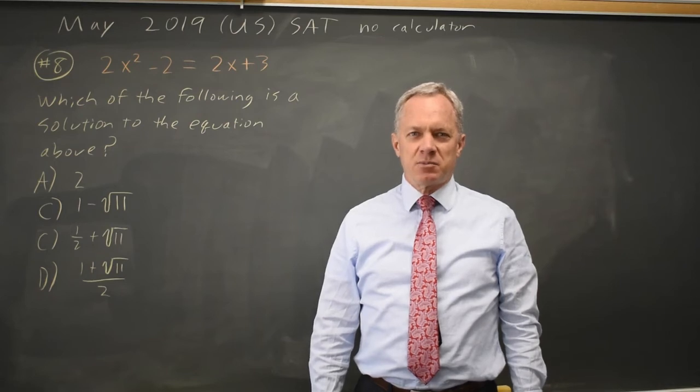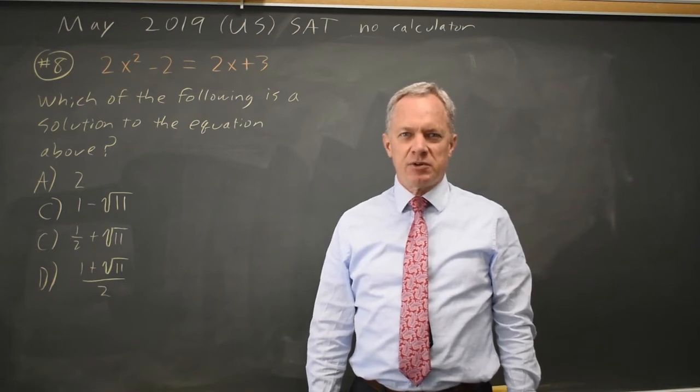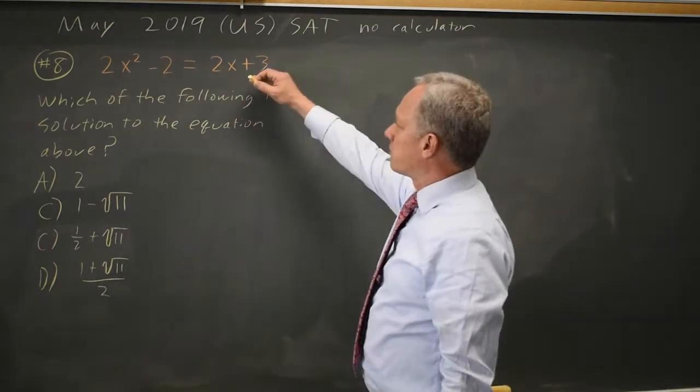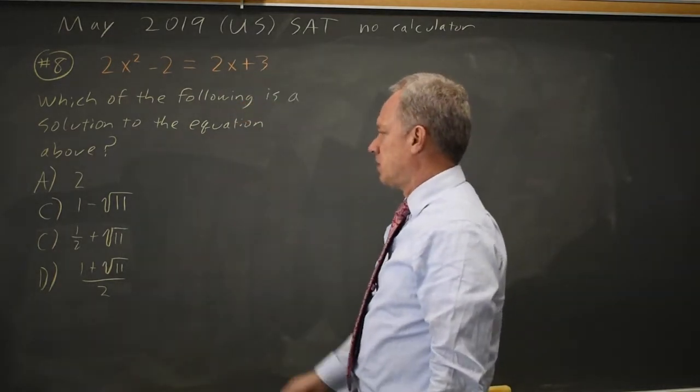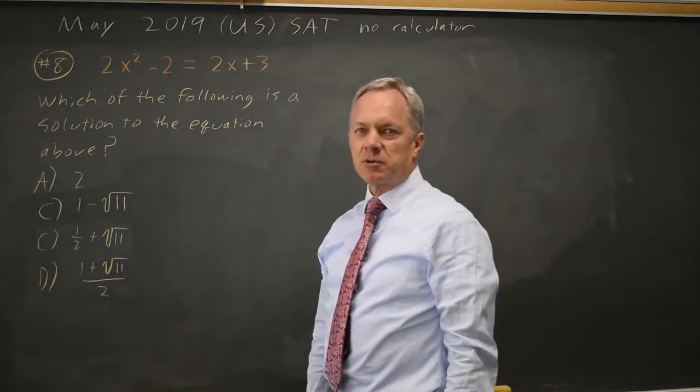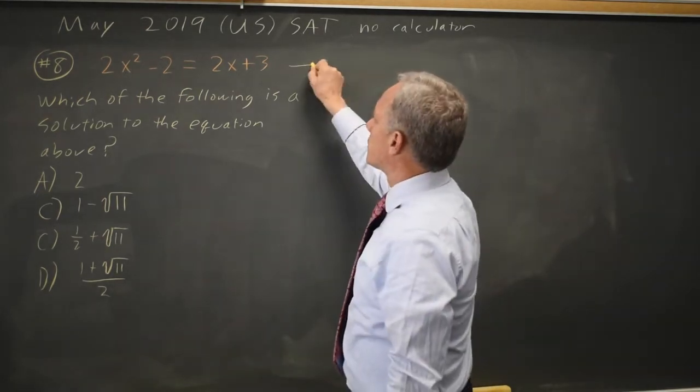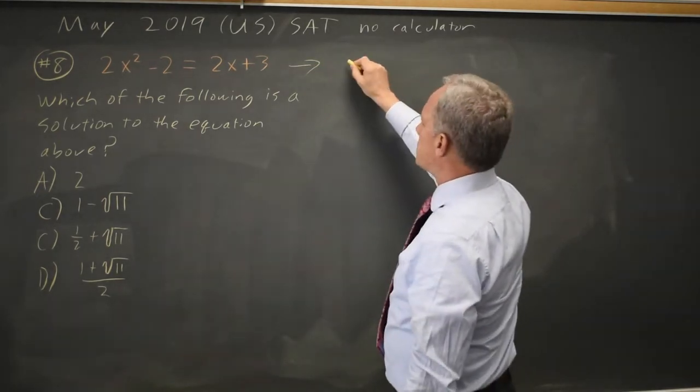This is non-calculator question number 8 from the May 2019 US exam. College Board gives us a quadratic equation asking for the solution. Since three of the four choices have a square root, I suspect I'm going to be using the quadratic formula. So let's set it up to do that.